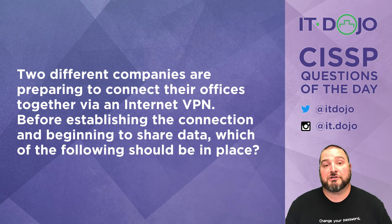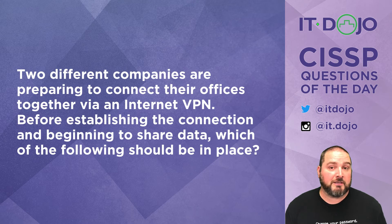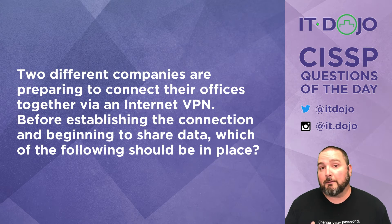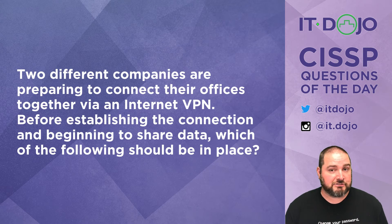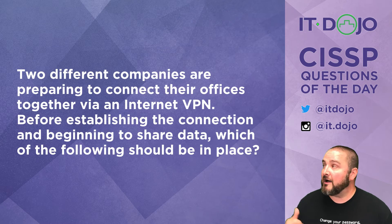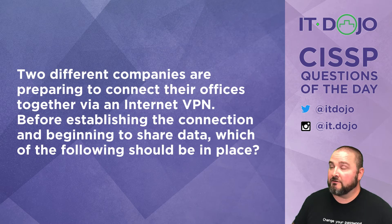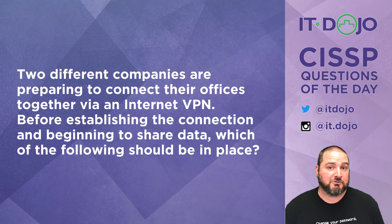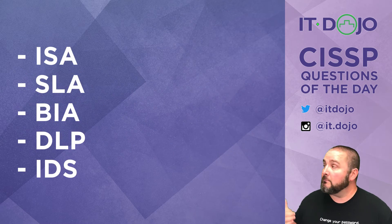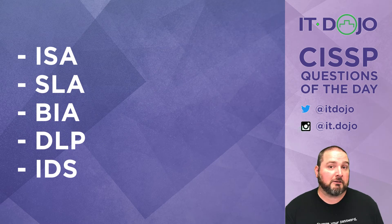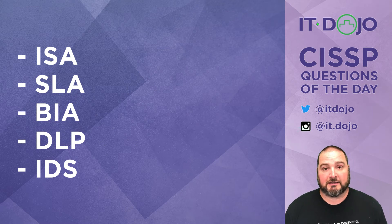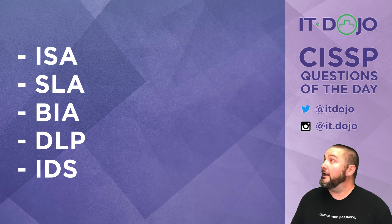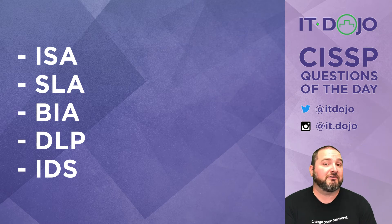Question number two: you have two different companies that are about to start sharing information via an internet VPN. Prior to making that connection and actually exchanging information, which of the following should you have in place between the two organizations? Click pause, check out those acronyms, and when you're ready click play.